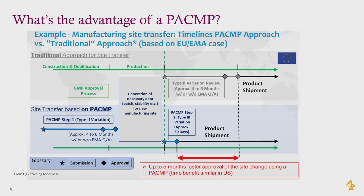Once we have that agreement, we generate the data and then notify. This is important because it gives us security around the kind of information and data we need to support that change before we ever put it into practice. In this scenario, assuming everything goes well, there's about a five-month difference in the time to product shipment. Add in any questions from the agency, and that five months can become seven months, twelve months, or even longer.